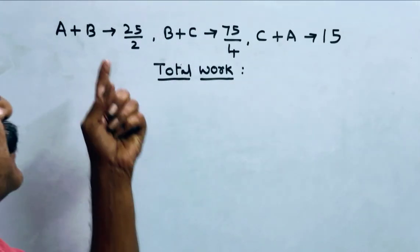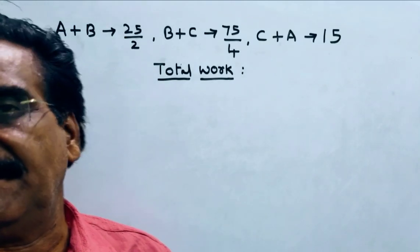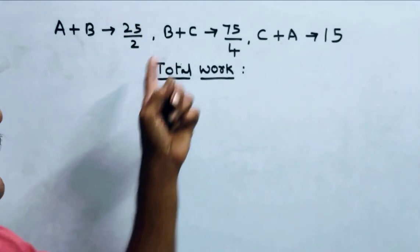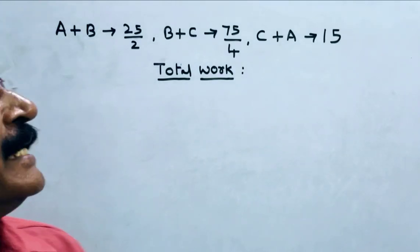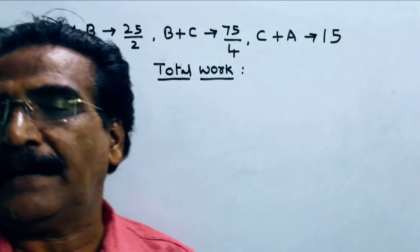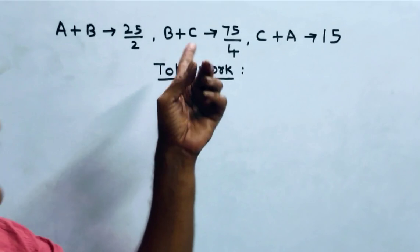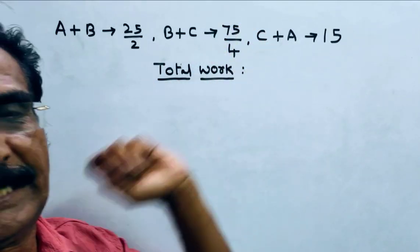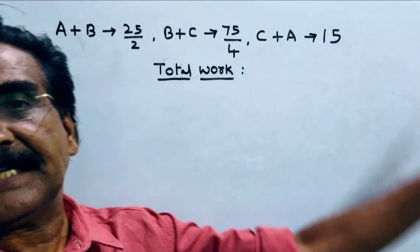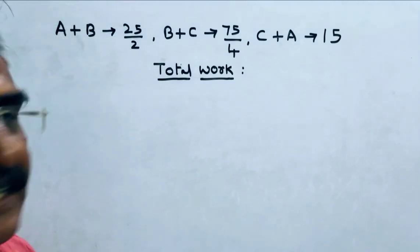See friends, A plus B can do a piece of work in 12.5 days that is 25 by 2 days whereas B plus C can do in 18.75 days that is 18 3 by 4 that is 75 by 4 days and C plus A can do the same work in 15 days.